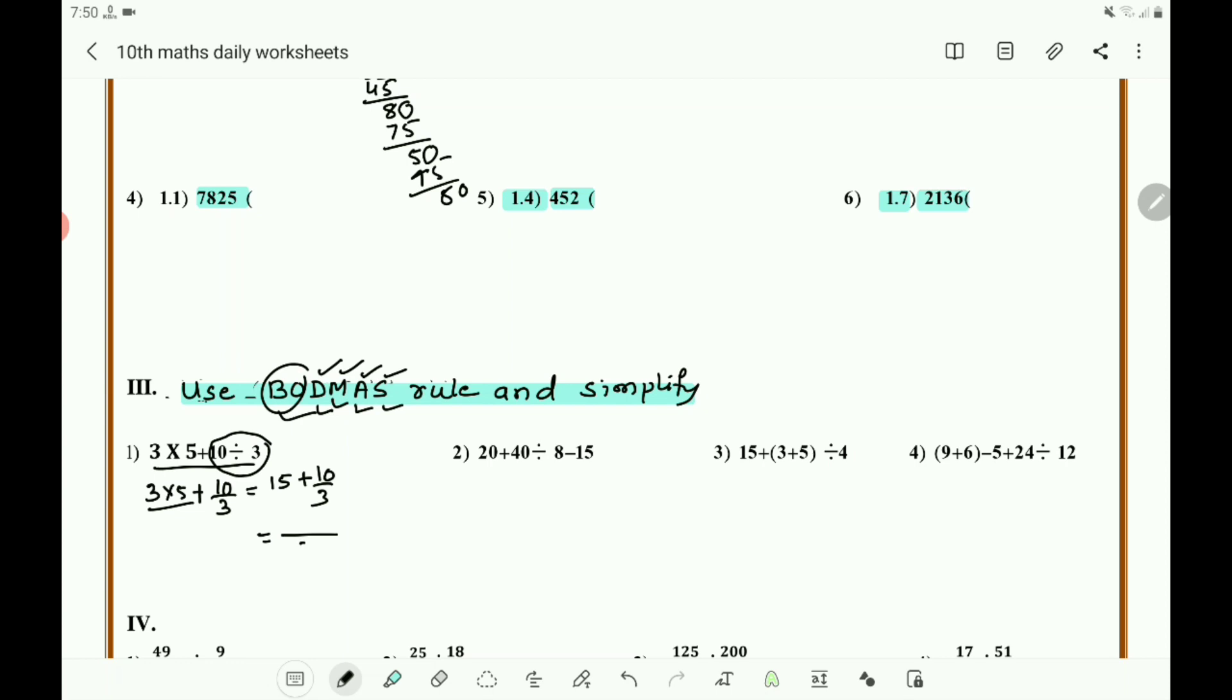The LCM is here 3. 15 means 15/1. LCM of 1 and 3 is 3. So take 3 here. In the numerator, you must write - 1 × 3 is 3, 15 × 3 is 45, then 3 × 1 is 3, so 10 × 1 is 10. You got 45 + 10 = 55/3. That is the answer.